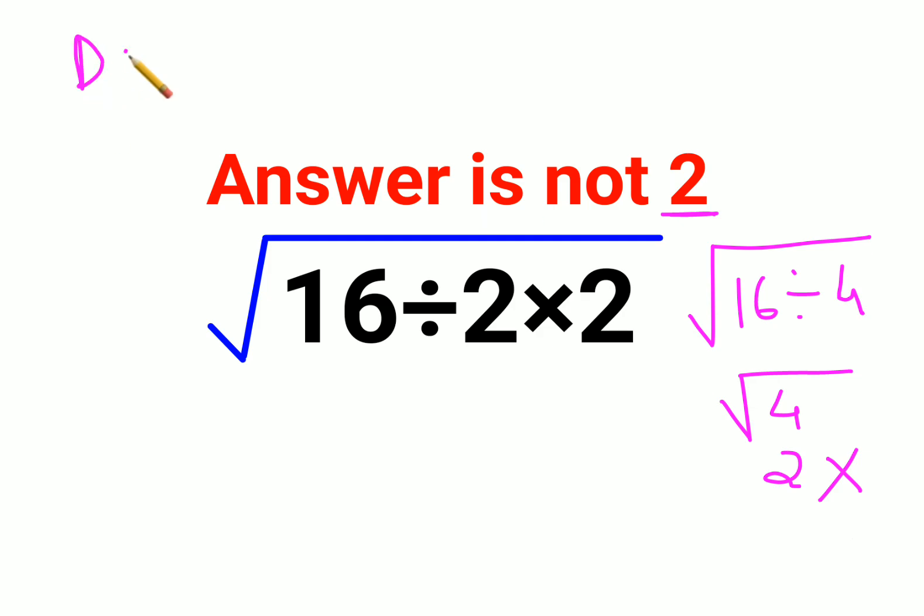Please understand, division and multiplication hold equal precedence. In cases when you have division and multiplication, you always have to go from left to right.